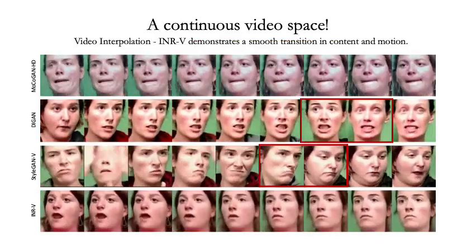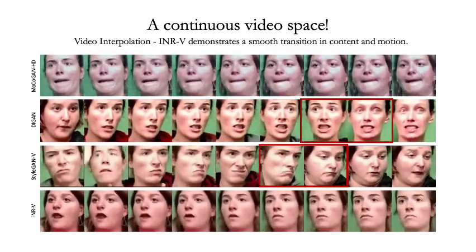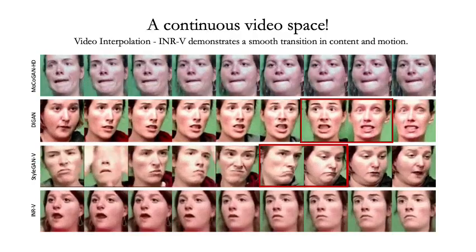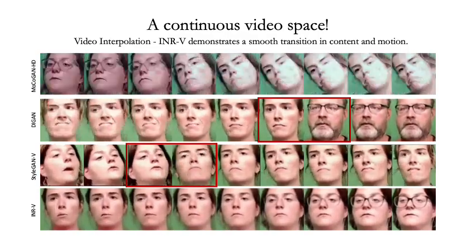Next, to test the continuous nature of the learned latent space, we interpolate between two videos. As an entire video is represented as a single latent point in INRV, interpolation is a natural operation. As can be seen from the videos, INRV displays a smooth transition in motion as well as content. StyleGANV does not show a coherent transition in content or motion. DiGAN shows sudden changes in identity as shown in the red boxes. Both StyleGAN and DiGAN show abrupt transitions in content, whereas INRV smoothly morphs between the content and motion.